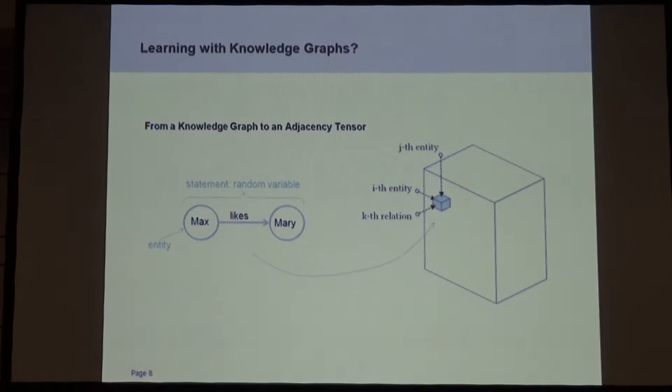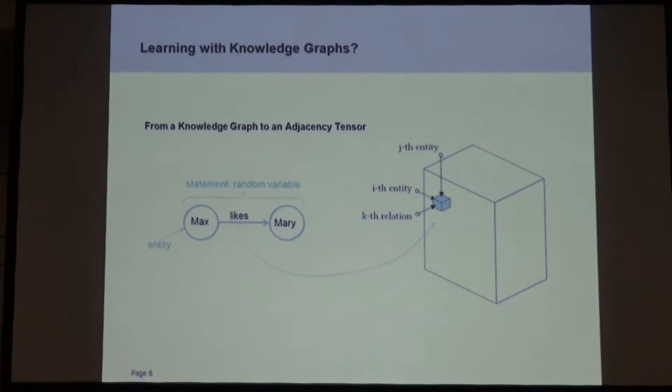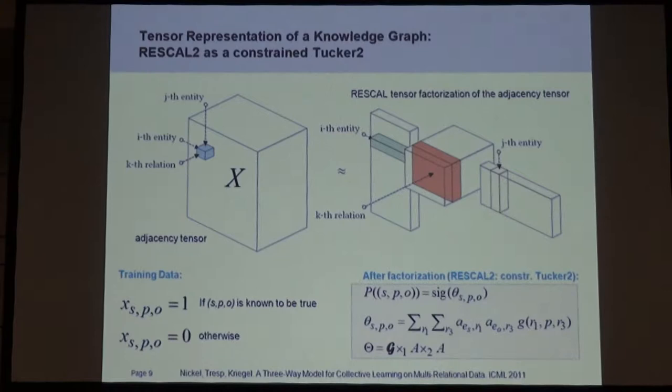How about learning with knowledge graphs? Our approach was to take the whole knowledge graph and make it into a tensor. The idea is you have three things: subject, predicate, object — Max likes Mary. So you need three indices, which give you a tensor. We put a one if we know that this subject-predicate-object triple is true, otherwise we leave everything zero. So it's huge and sparse.